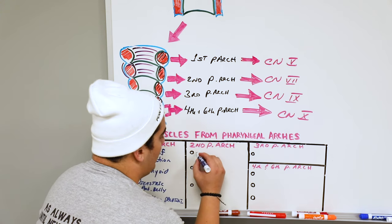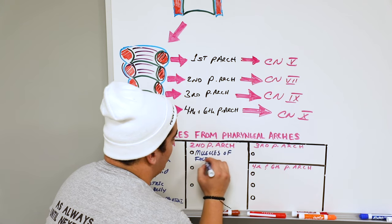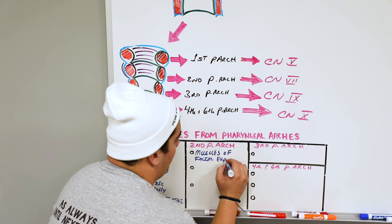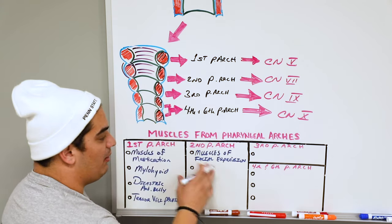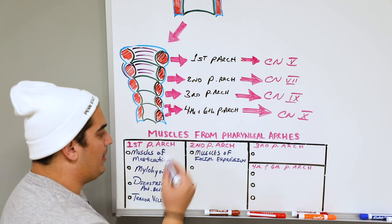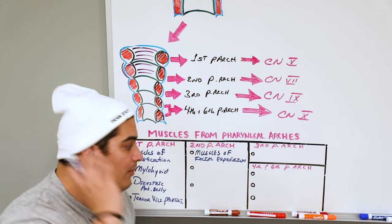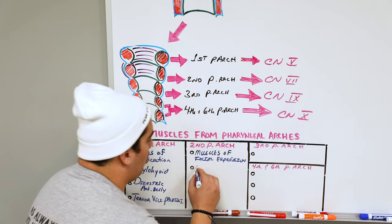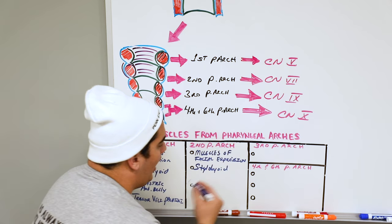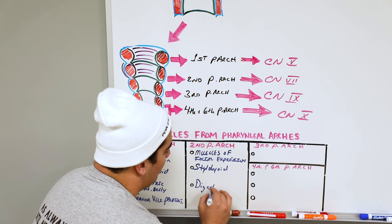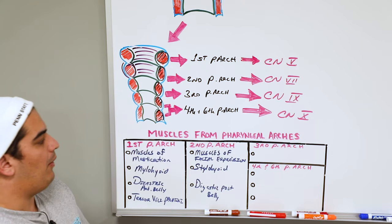Most of the muscles of our face are muscles of facial expression, supplied by cranial nerve seven. The second pharyngeal arch also produces the stylohyoid and the posterior belly of the digastric, which are suprahyoid muscles. There is also a small stapedius muscle from this arch.